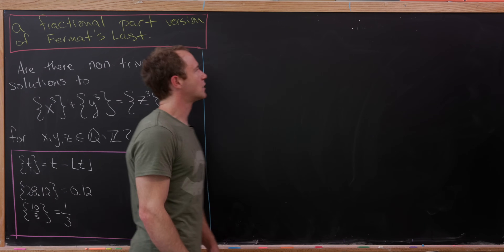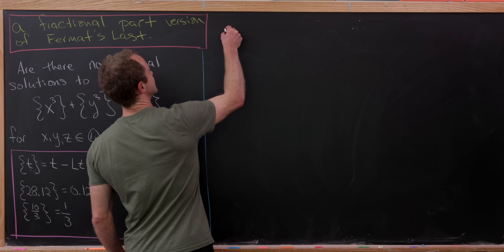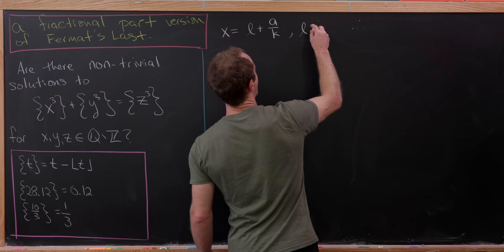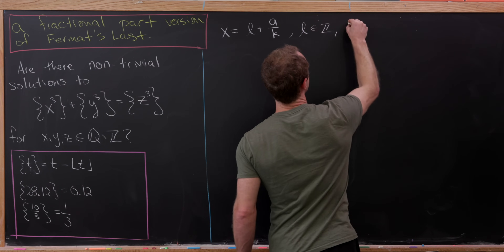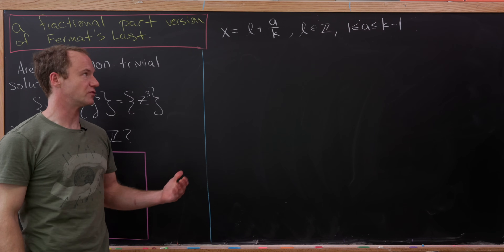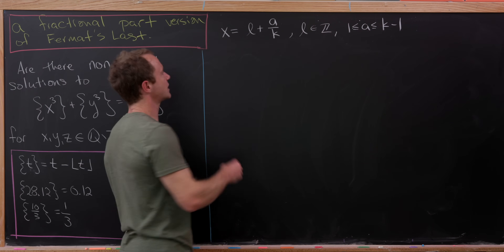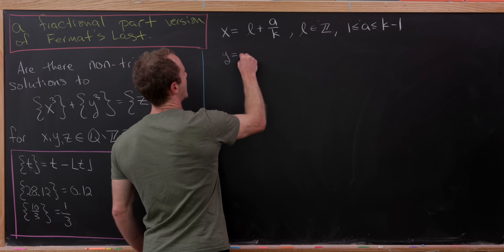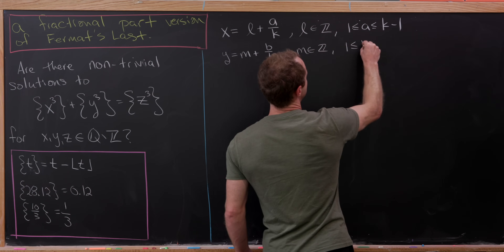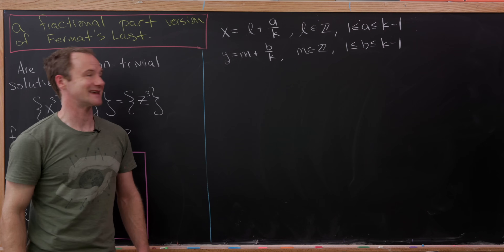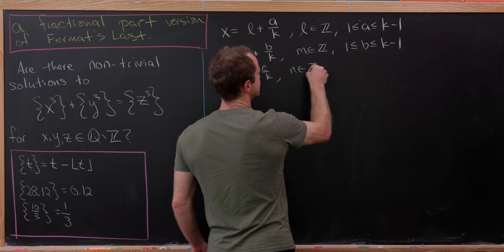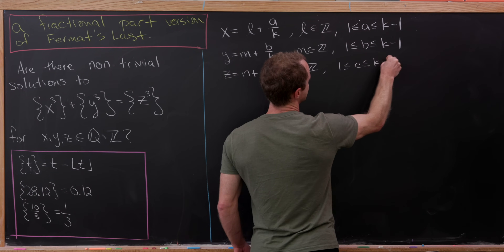Our strategy is to write x, y, and z in the following format: x = l + a/k where l is an integer and a is between 1 and k−1 — an appropriate numerator for denominator k. Similarly, y = m + b/k with m an integer and b between 1 and k−1. And z = n + c/k with n an integer and c in the same range.